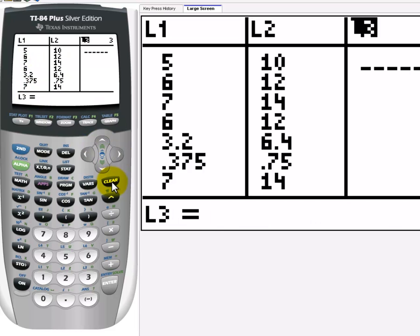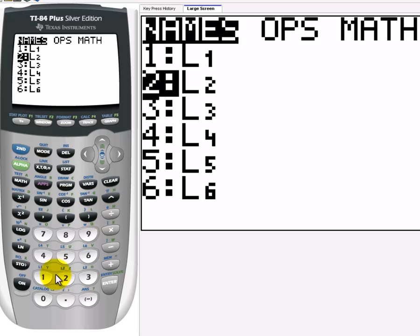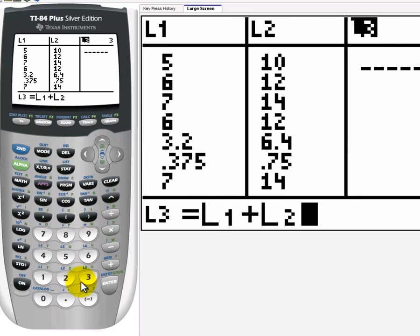If you move over to list 3, let's say list 3 is going to be the sum of list 1 and list 2. Well, second function, list 1 plus, second function list, list 2, again by scrolling or just selecting 2. List 1 plus list 2, enter.